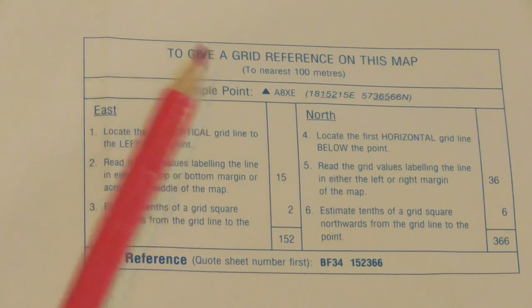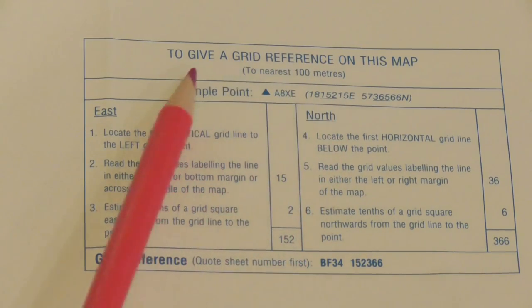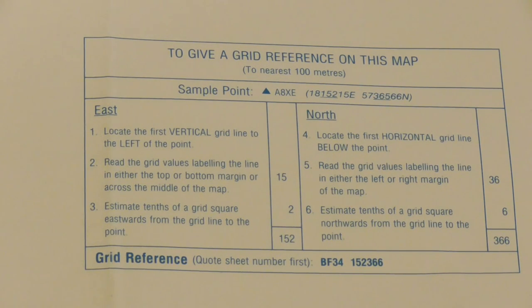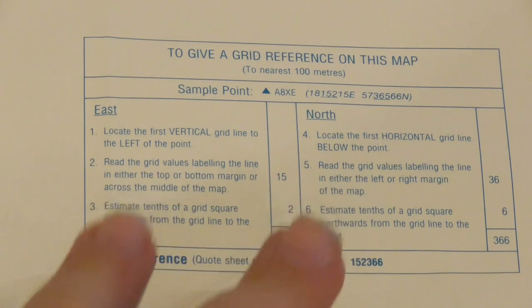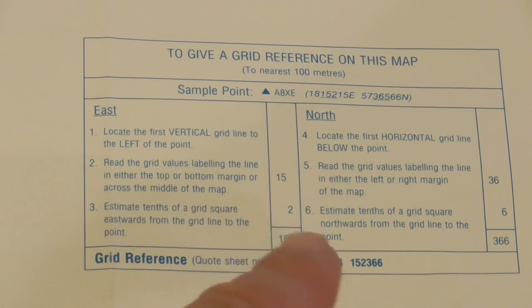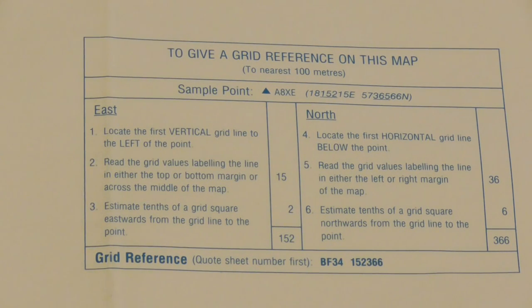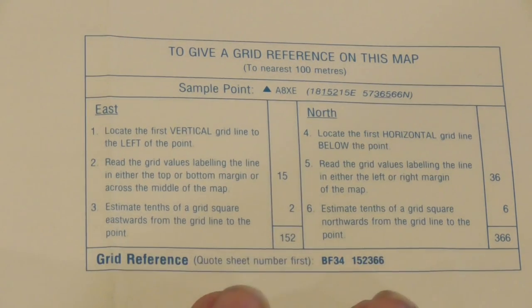On the left-hand side of the margin we have what we call the grid reference — to give a grid reference on this map. We're not going to do grid references at the moment. A grid reference basically gives a location of where you are on the map, or a location of a place on the map. We'll go into grid references on another video — I don't want to make this video too long.